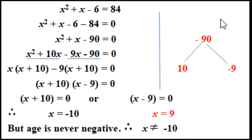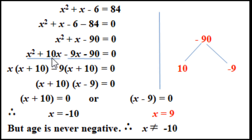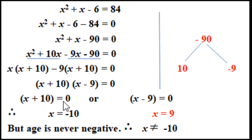The numbers are positive 10 and negative 9. So we replace x as plus 10x minus 9x. Taking common: x(x plus 10) minus 9(x plus 10) equals 0, giving us (x plus 10)(x minus 9) equals 0. Therefore x plus 10 equals 0 or x minus 9 equals 0.